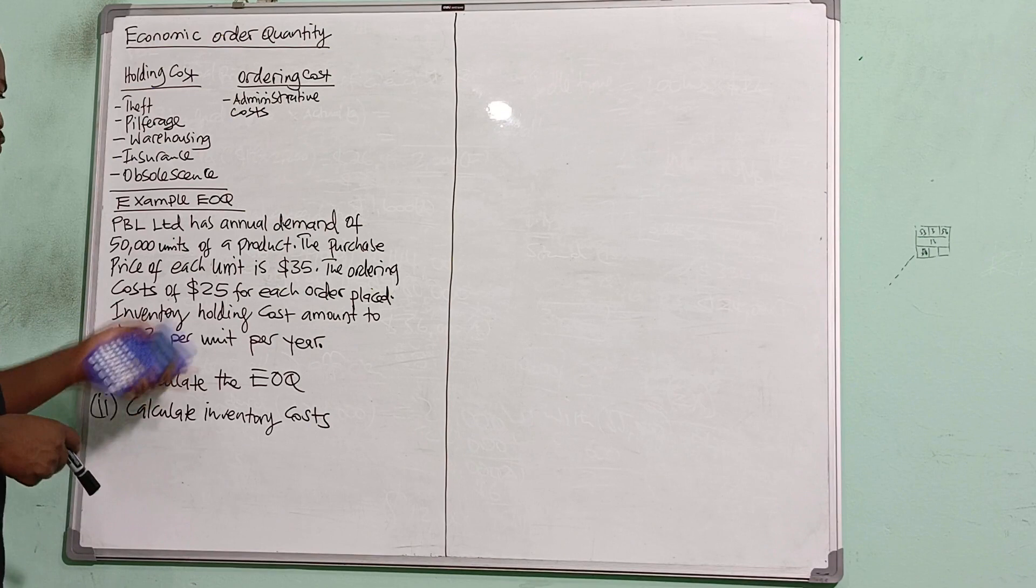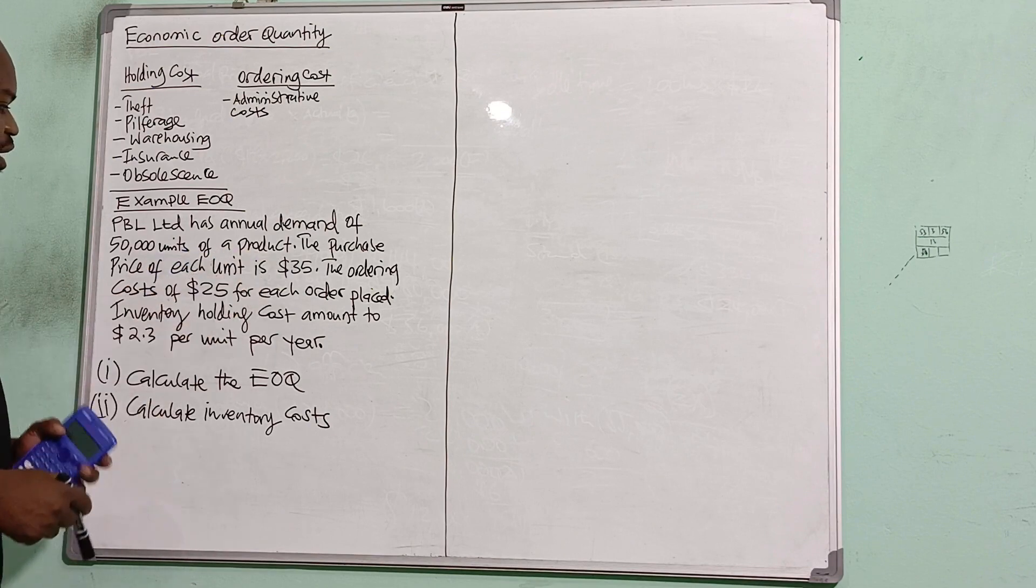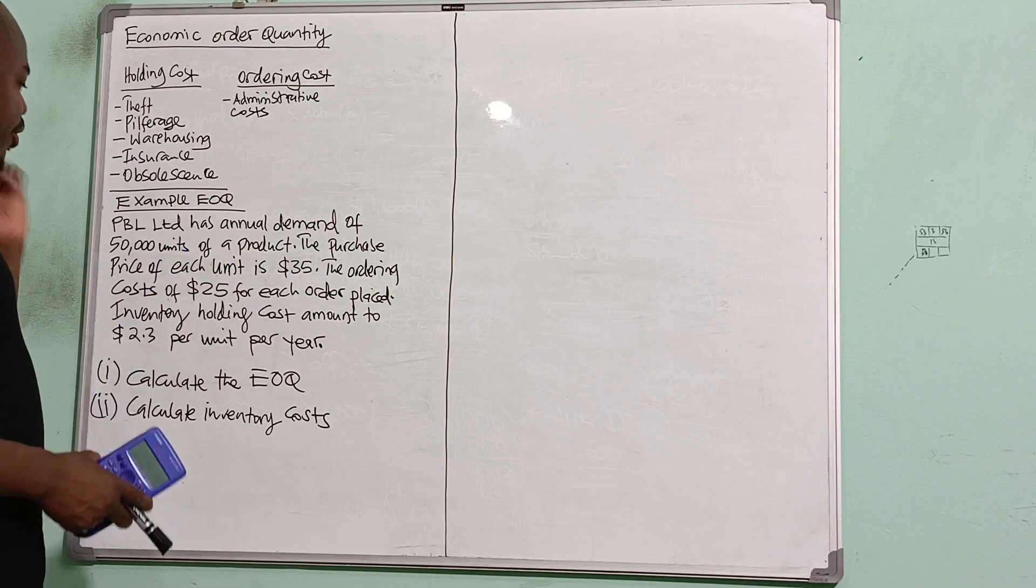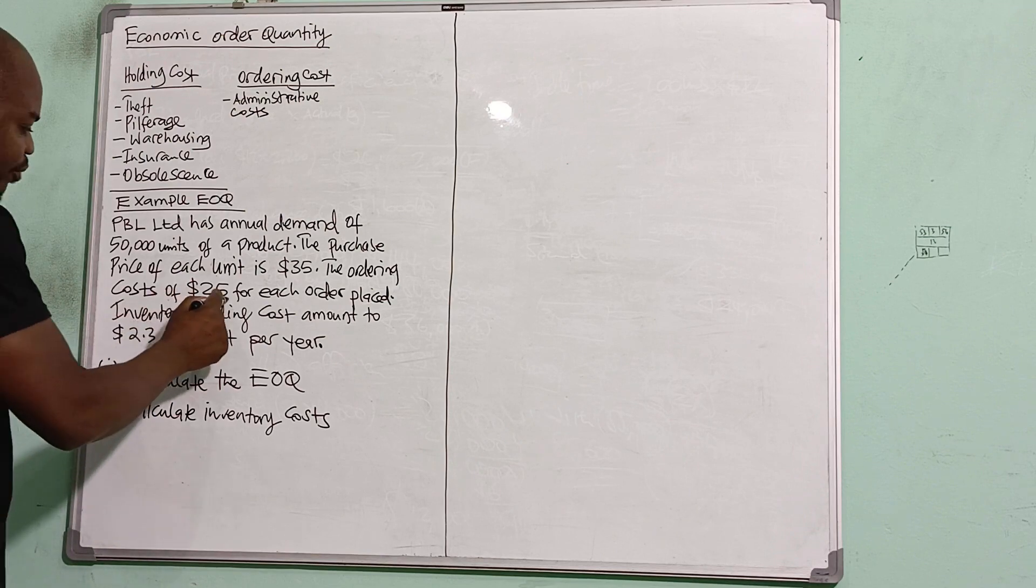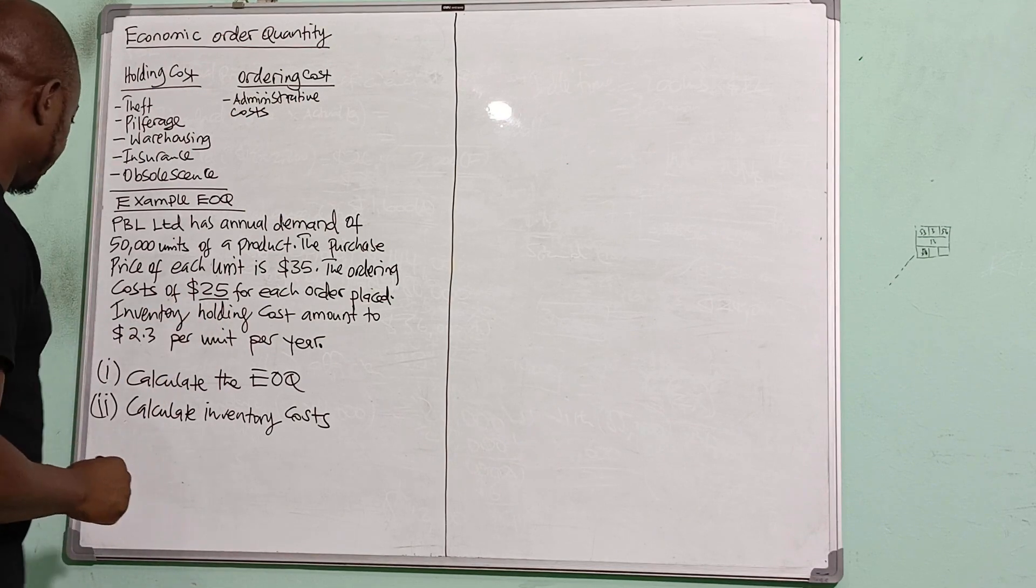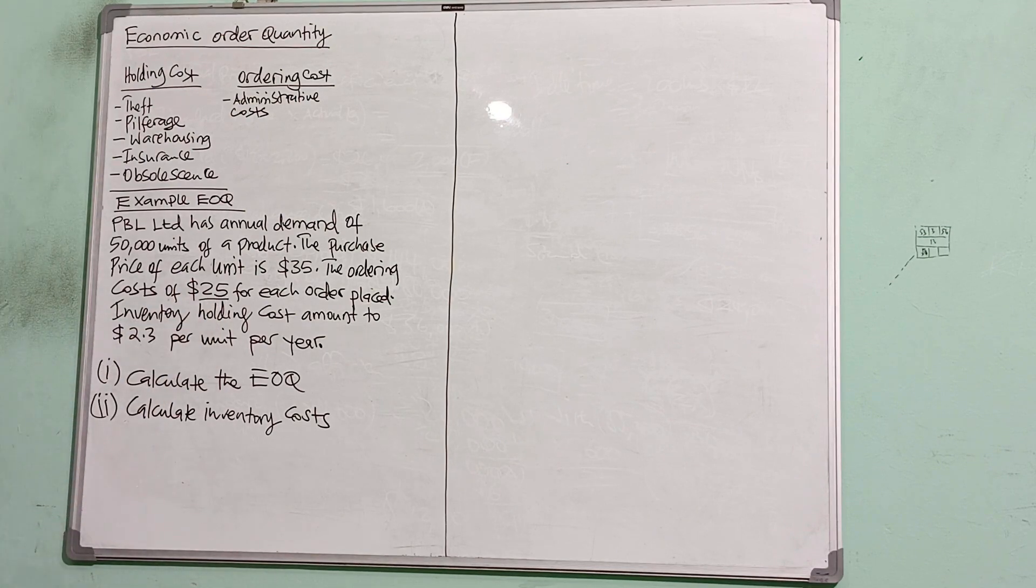The purchase price of each unit is $35. The ordering cost is $25 for each order placed. So there is an ordering cost of $25 whenever we place an order. And then inventory holding costs amount to $2.3 per unit per year. So I've been given this information and then I need to calculate the EOQ.